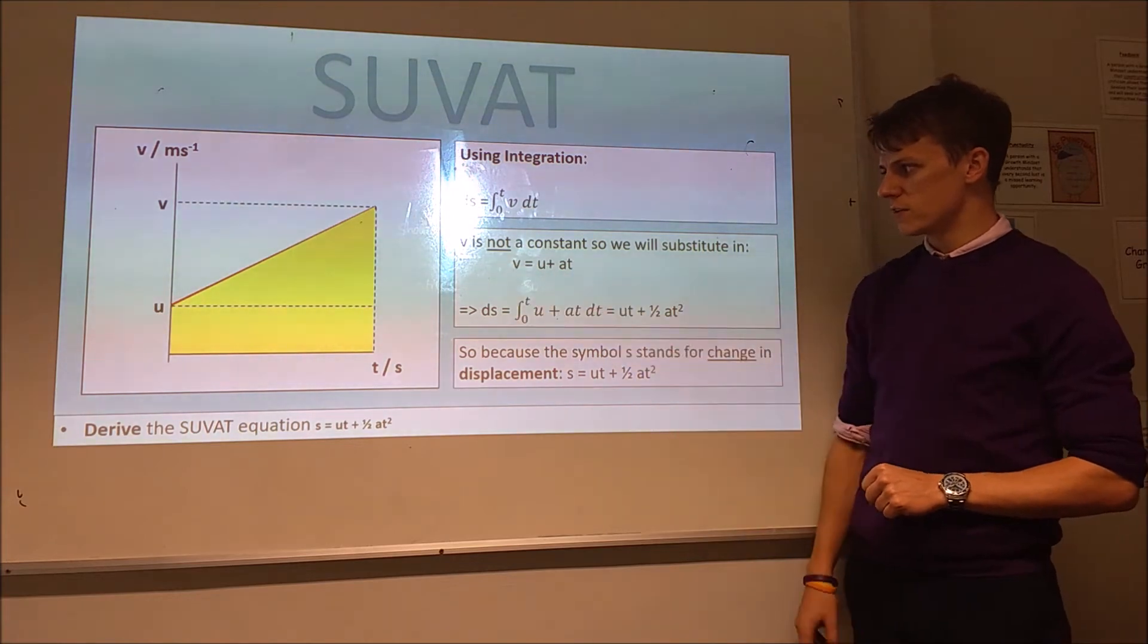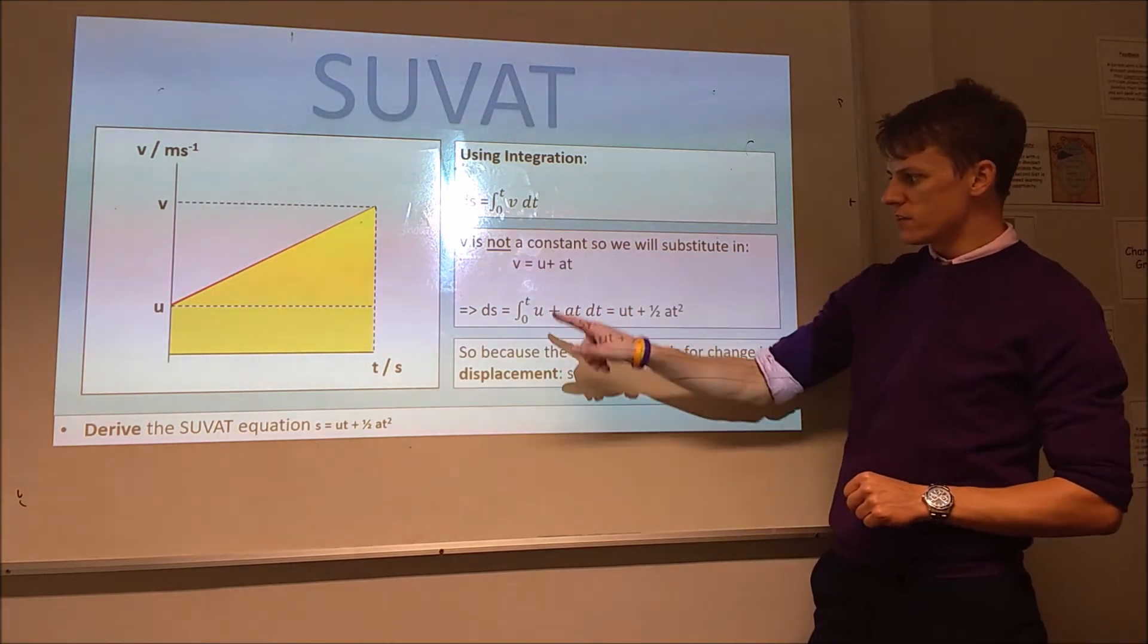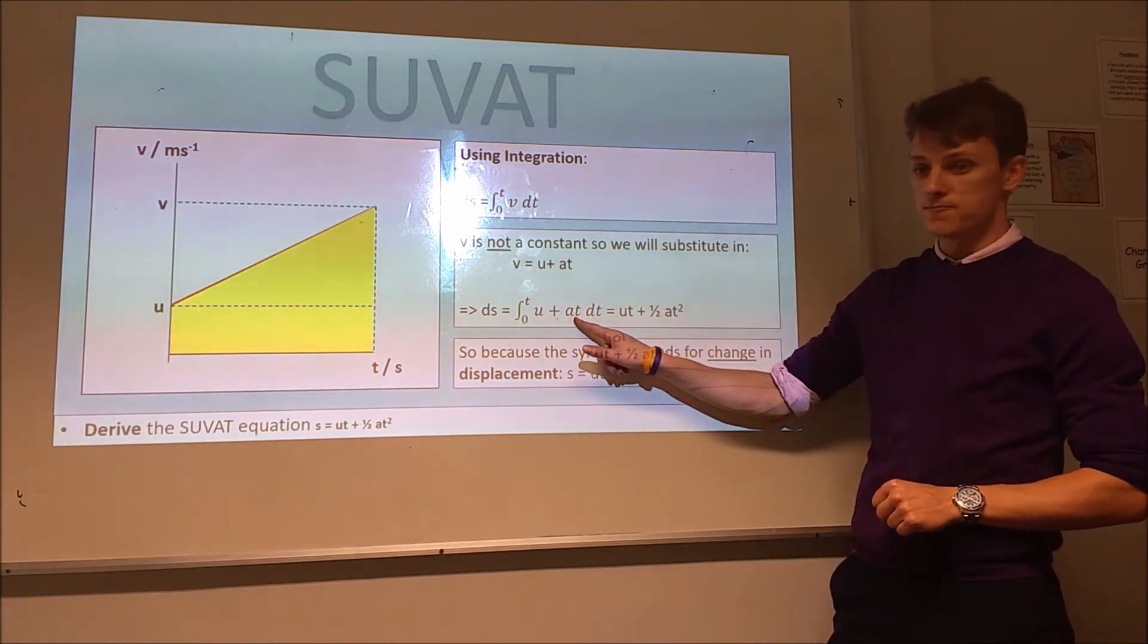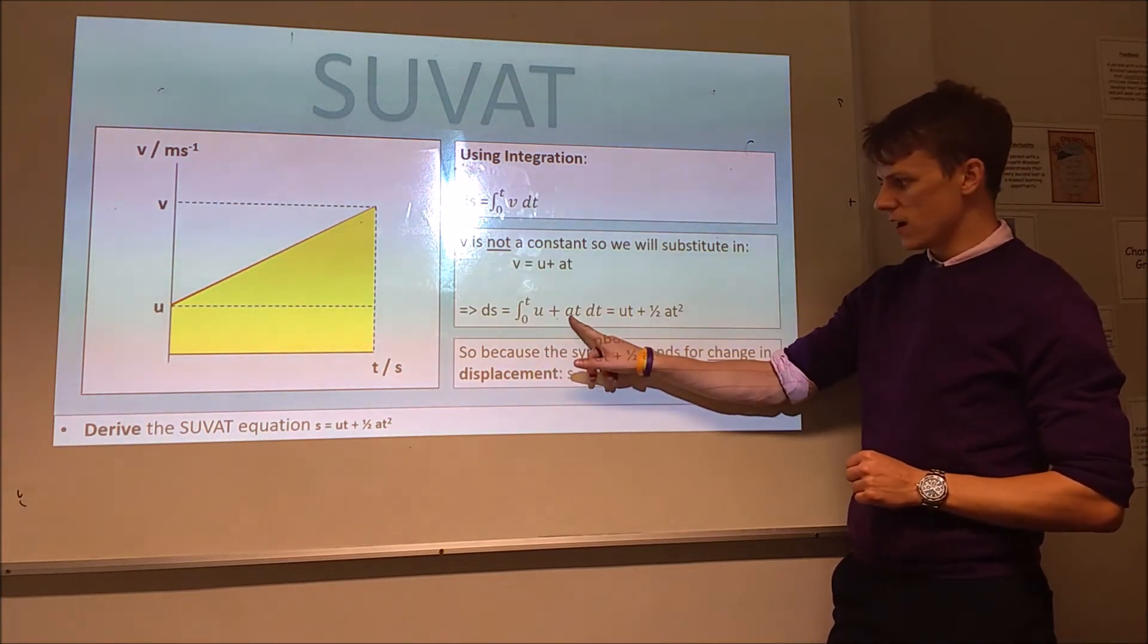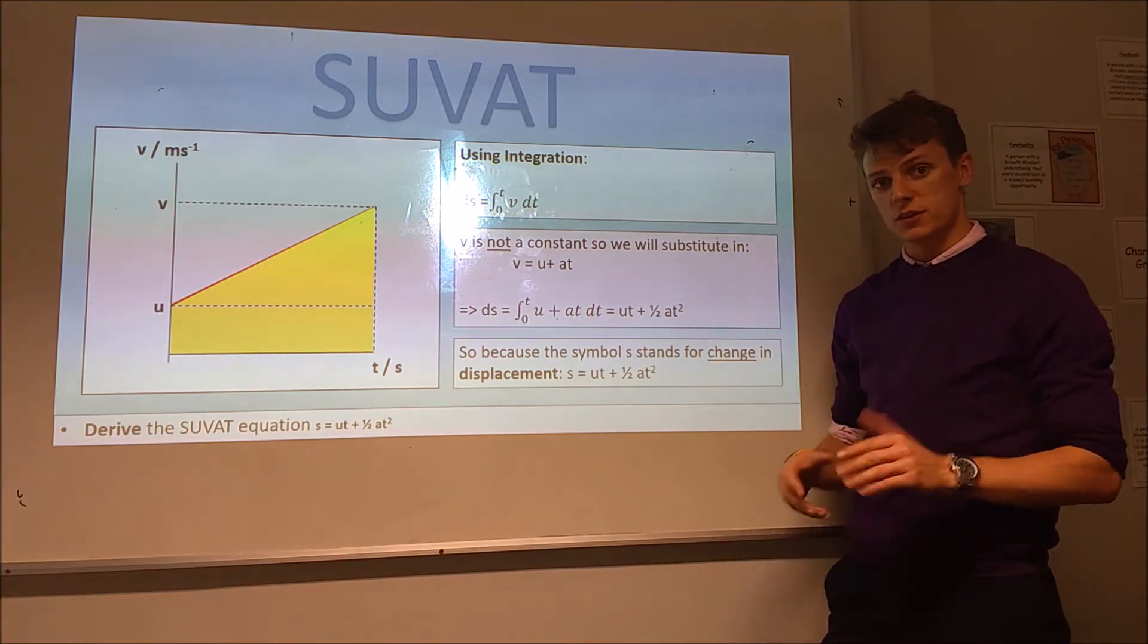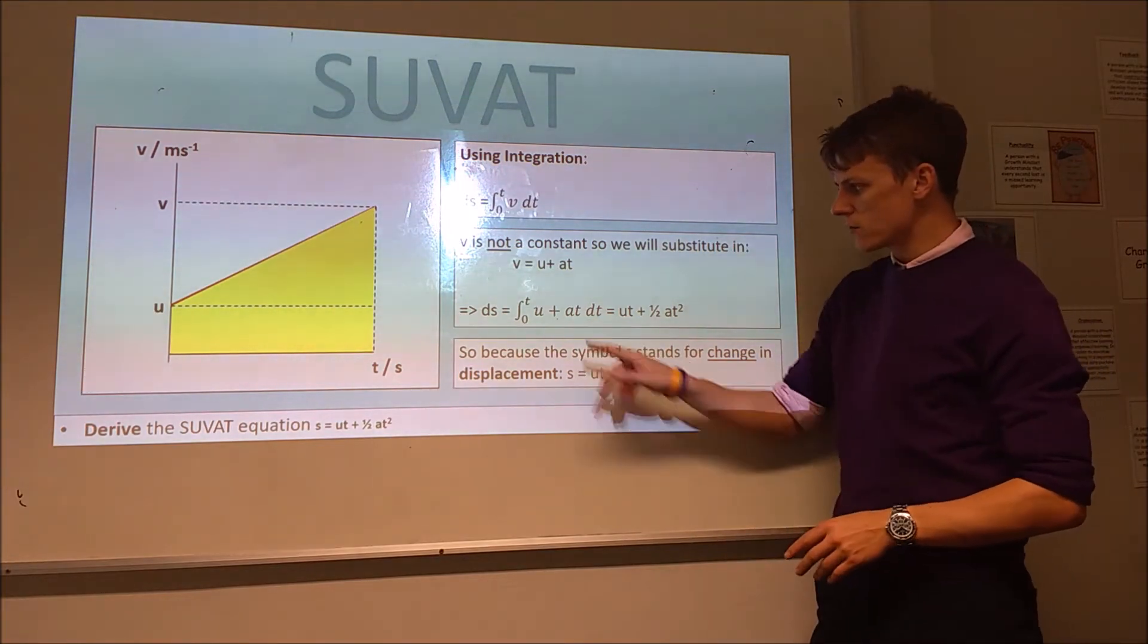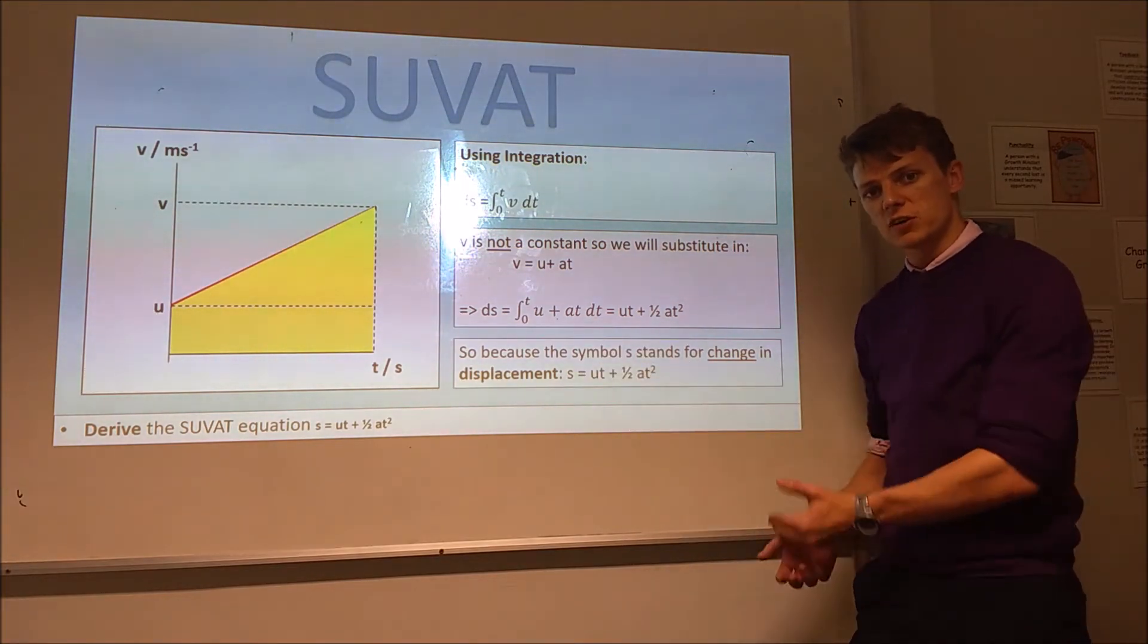So, we're going to use this equation here, v equals u plus at, so even for v, we put u plus at. So, we've got u, which is a constant, it's the initial velocity, we've got a, acceleration, which is constant, because we're doing the SUVAT equations, and we've got time, so it's only a function of time.